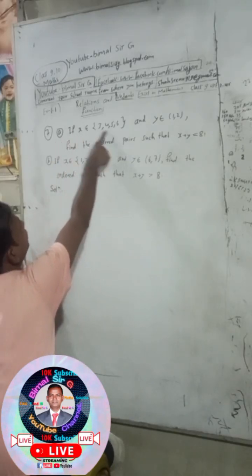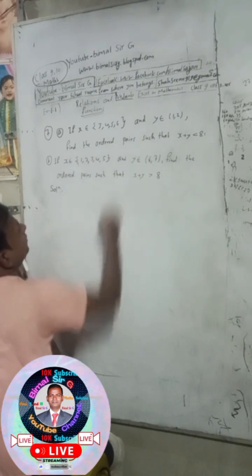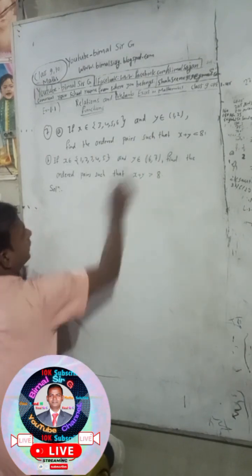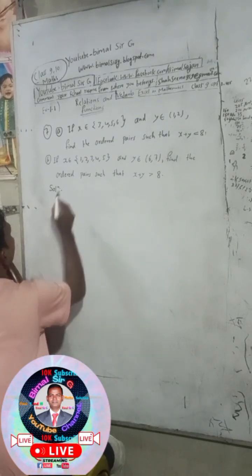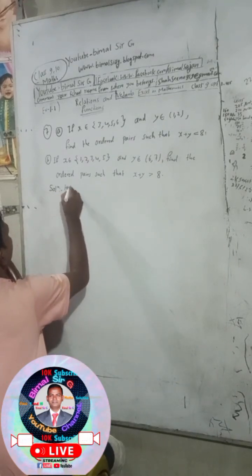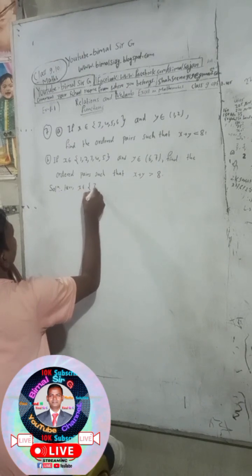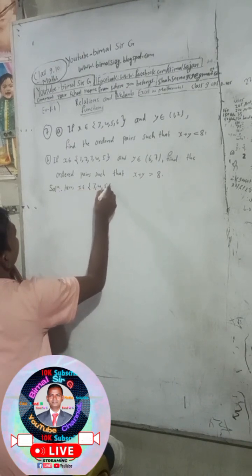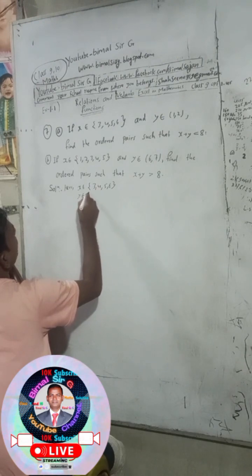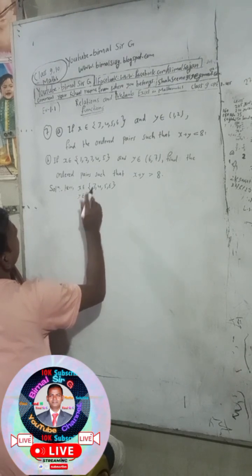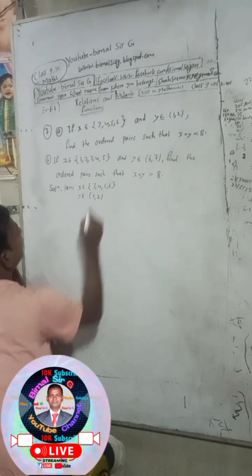If x belongs to {3, 4, 5, 6} and y belongs to {1, 2, 5}, find the ordered pairs such that x plus y is less than 8.